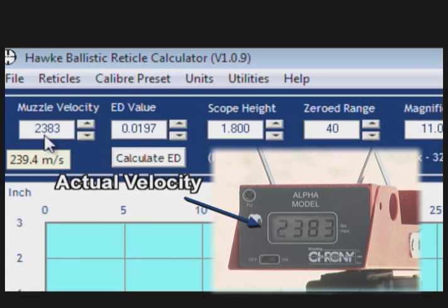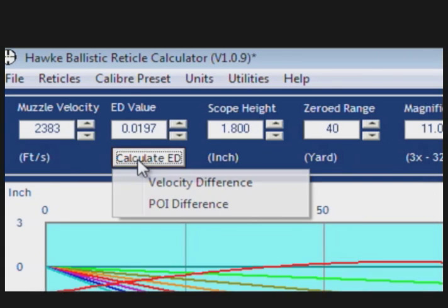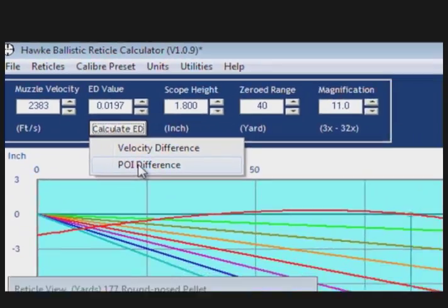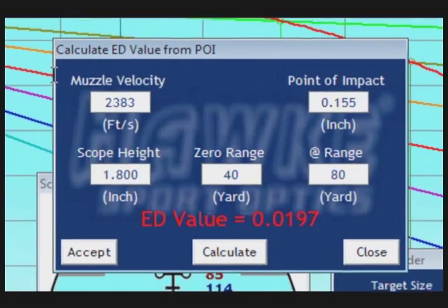The next step we're going to do is to create an ED value. ED stands for effective deterioration. We can do that two different ways: we can do it from a point of impact change or a velocity change. Today we're going to select the point of impact change.